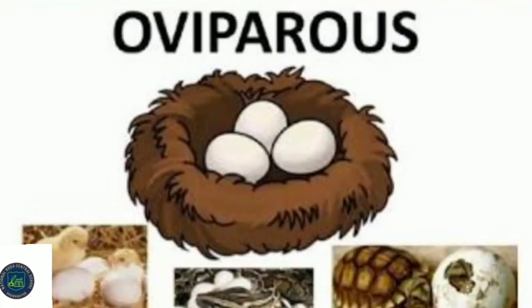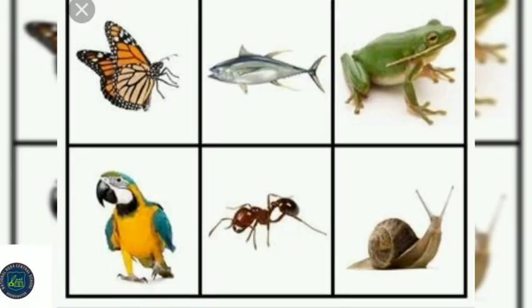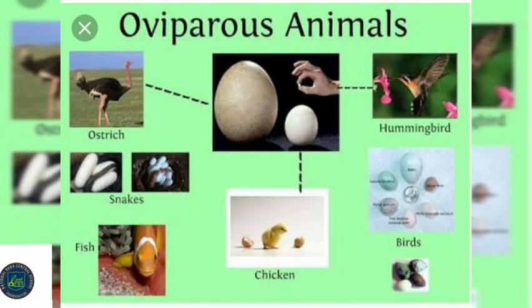We can see various examples of oviparous animals: birds, butterflies, frog, ant, tortoise, fish, etc. are some of the examples of oviparous animals.